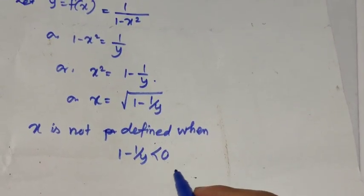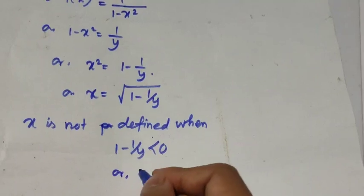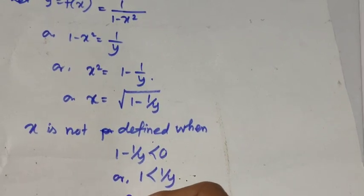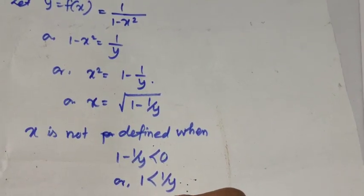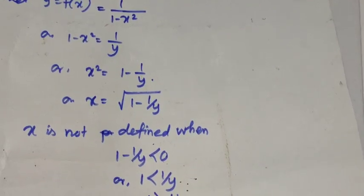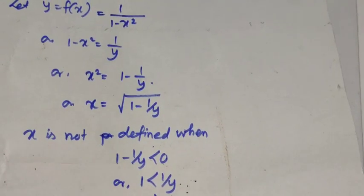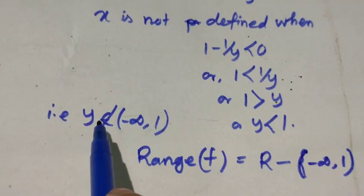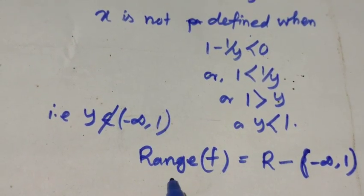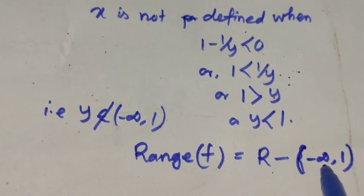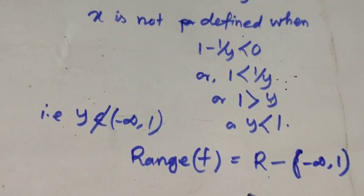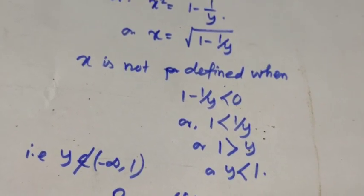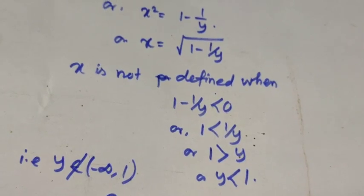From 1 − 1/y < 0, we get 1 < 1/y, which means y < 1. So y does not belong to (−∞, 1). Therefore, the range of f is ℝ − (−∞, 1), indicating that the value of y can be any real number excluding values in the interval (−∞, 1).